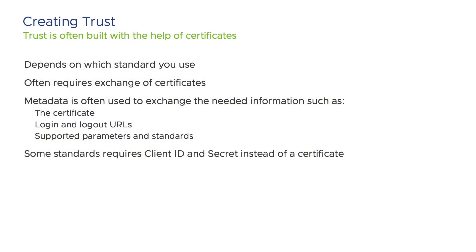In a claim-based access model, trust is at the heart. In order for it to work, the application must trust the identity provider. How you establish trust varies depending on which standard you use. Often trust is built with the help of exchanging certificates. When you create the trust, you are often asked to use something referred to as the metadata — typically a file or a link to a file. The application shares its metadata with the identity provider, and the identity provider shares its metadata with the application. Using a metadata file simplifies the establishment of trust. The metadata often contains the certificate, login and logout URLs, and what parameters each system supports or requires. Not using a metadata file requires you to manually enter these parameters. For some standards, you do not use a certificate — instead you use something like a system username and password.